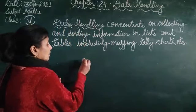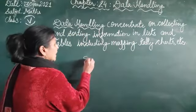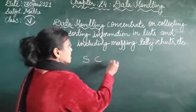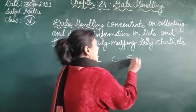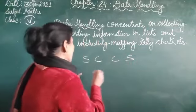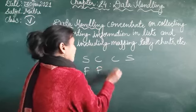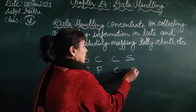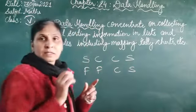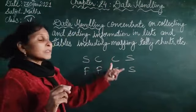suppose here I am writing that S, C, C, S, F, F, C and S. These are the schools.